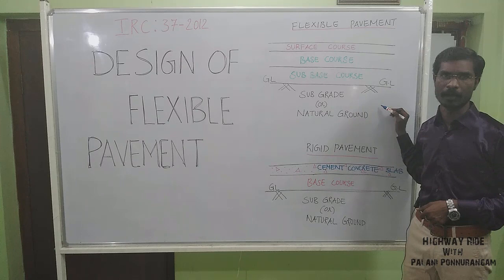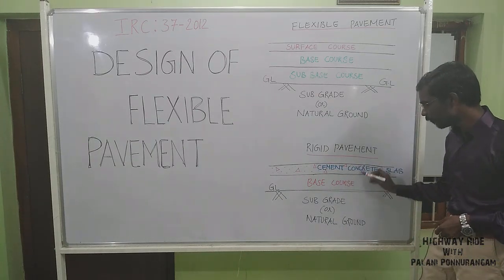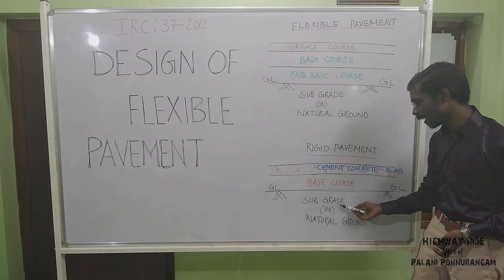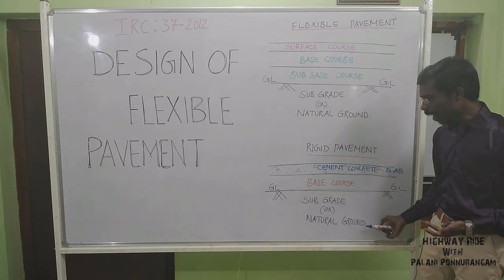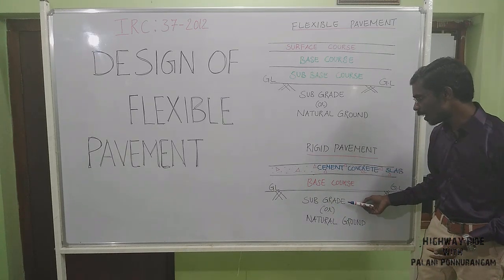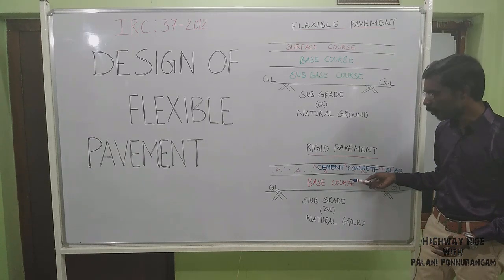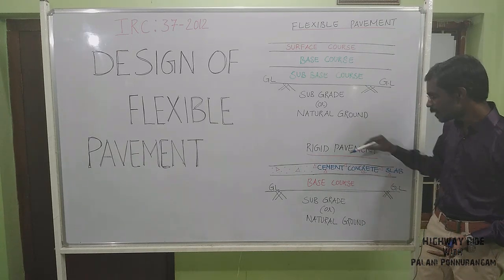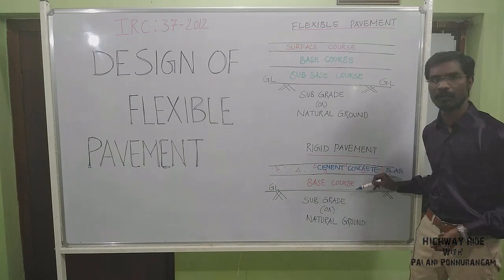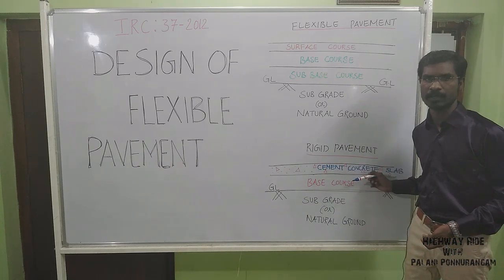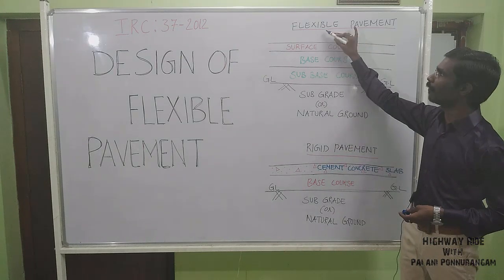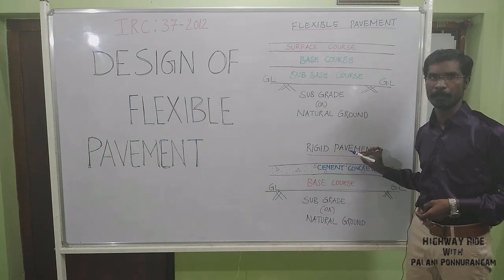Now for Rigid Pavement, the number of layers is fewer. The first layer is the Subgrade or Natural Ground Level. Above that, we lay the Base course, and above the Base course we place the Cement Concrete Slab. This is the arrangement of Rigid Pavement layers.